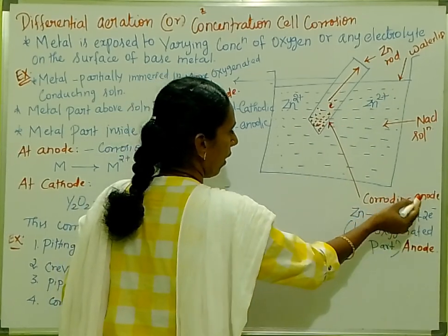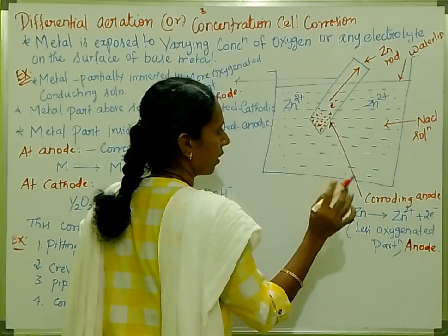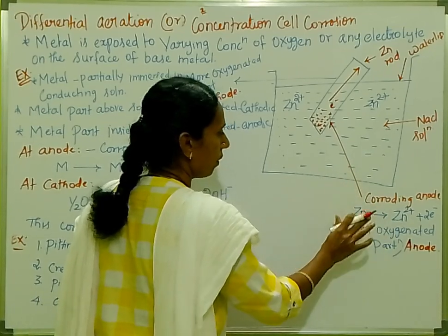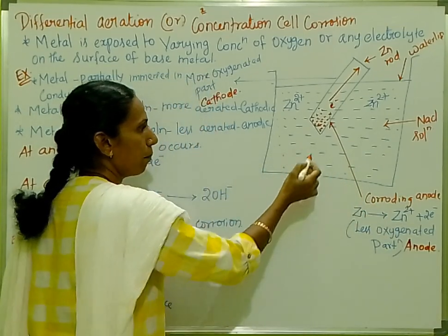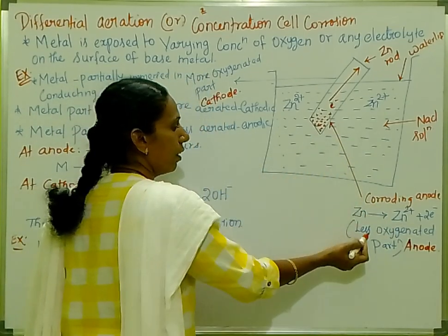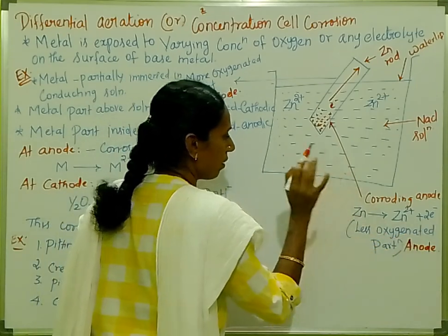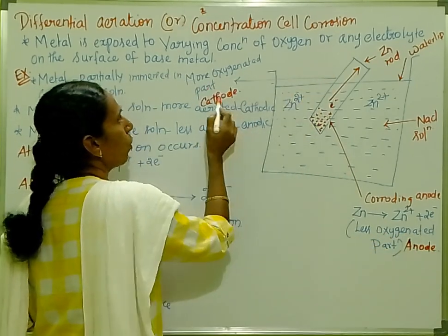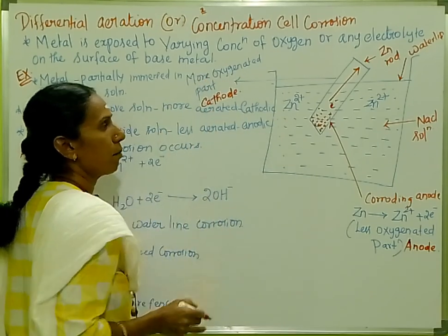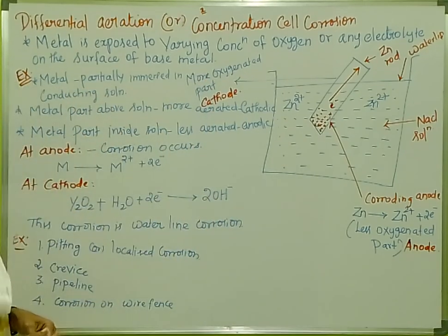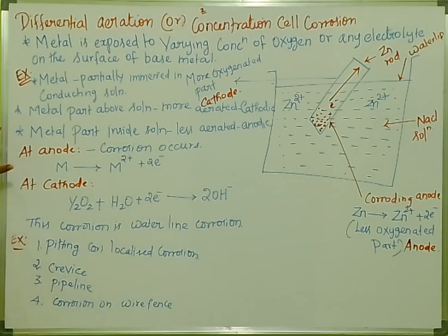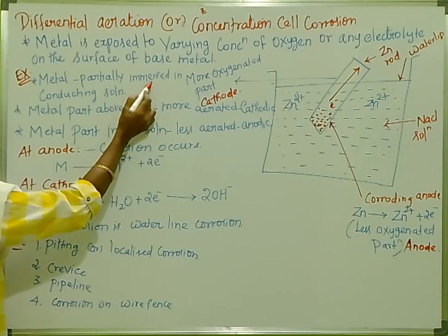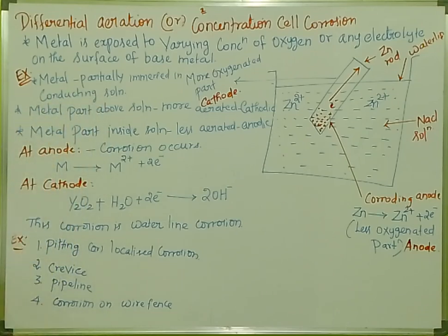This is the corroding anode. There is a mechanism here. This is the path of the less oxygenated part. This is the diagram. The concept is that the metal is partially immersed in a conducting solution.